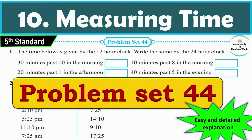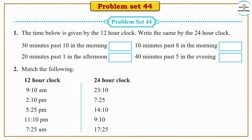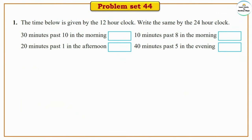Hello dear students, today we are going to learn and understand Problem Set 44 of Chapter 10, Measuring Time, from 5th standard mathematics, page number 62. The problem below is given — we will solve Problem Set 44. Question 1: the time below is given by the 12-hour clock; write the same by the 24-hour clock.